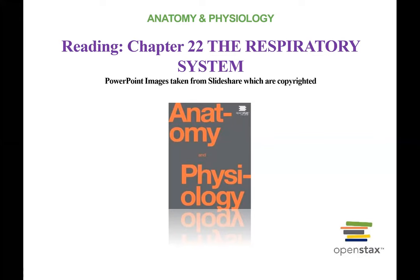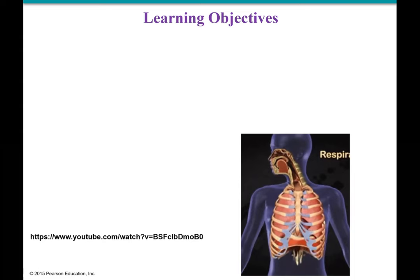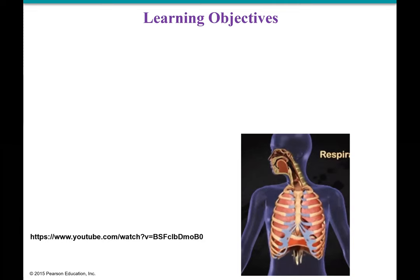Kindly also watch the videos that I have posted for you on Blackboard. So the objectives are just like any other system — we study the anatomy and physiology of the system. The respiratory system goes hand in hand with the circulatory system that we studied recently. In the circulatory system, the heart pumps deoxygenated blood into the lungs, the lungs oxygenate it and send it back to the heart to be pumped to the rest of the body. So they work together.